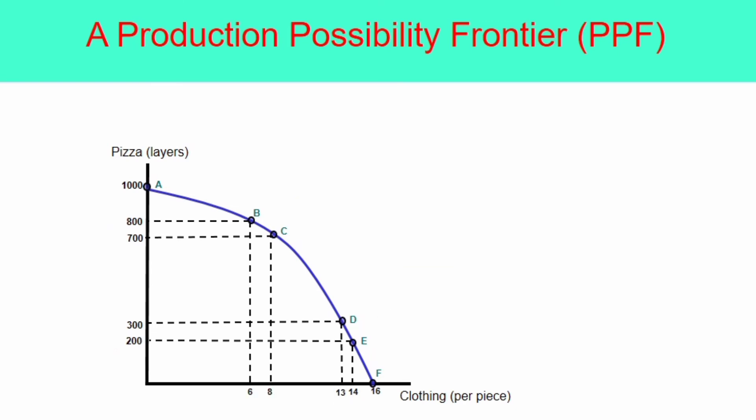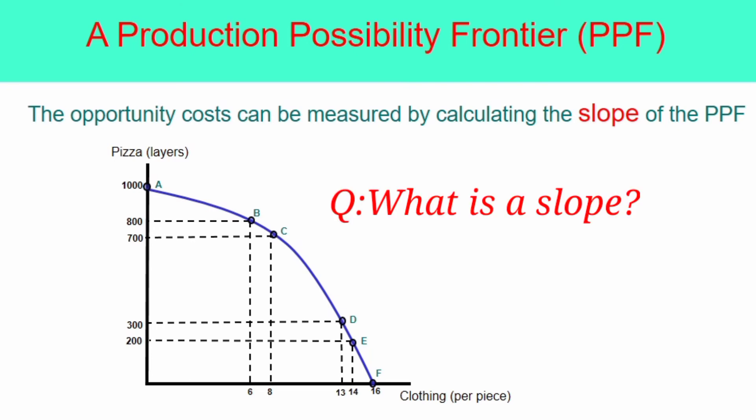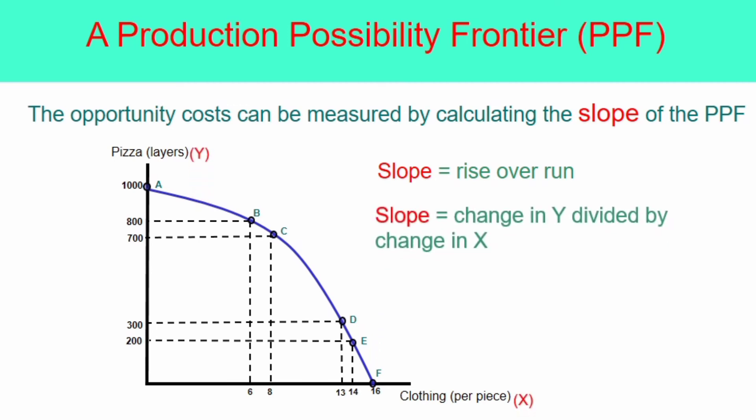If you find it difficult to determine the opportunity cost, there is another way to describe it. This time, we will measure the slope of the PPF. In math, the slope of a line is a measure of its steepness. Similarly, the slope of the PPF measures the steepness of the curve, the blue-colored line. So, how to calculate the slope of the PPF? Slope is calculated as rise over run. Or, the change in Y divided by the change in X. For example, if we will calculate the slope at point B to C, using the formula, the slope is negative 50.